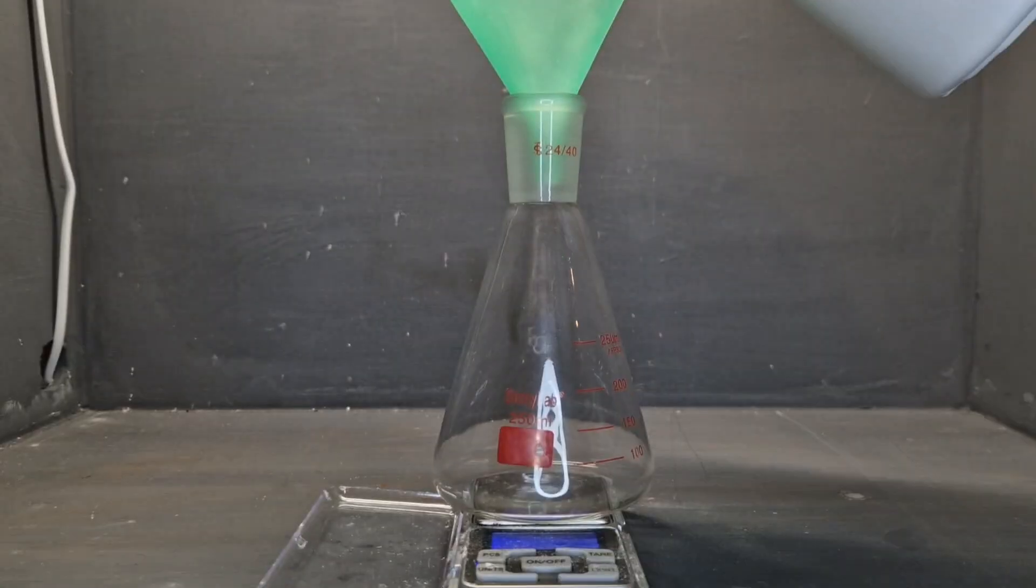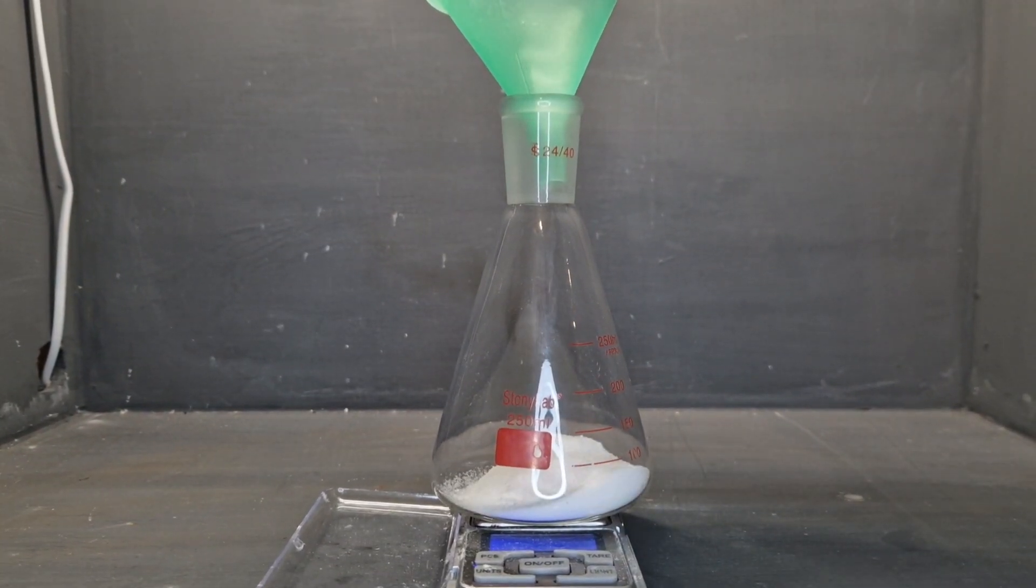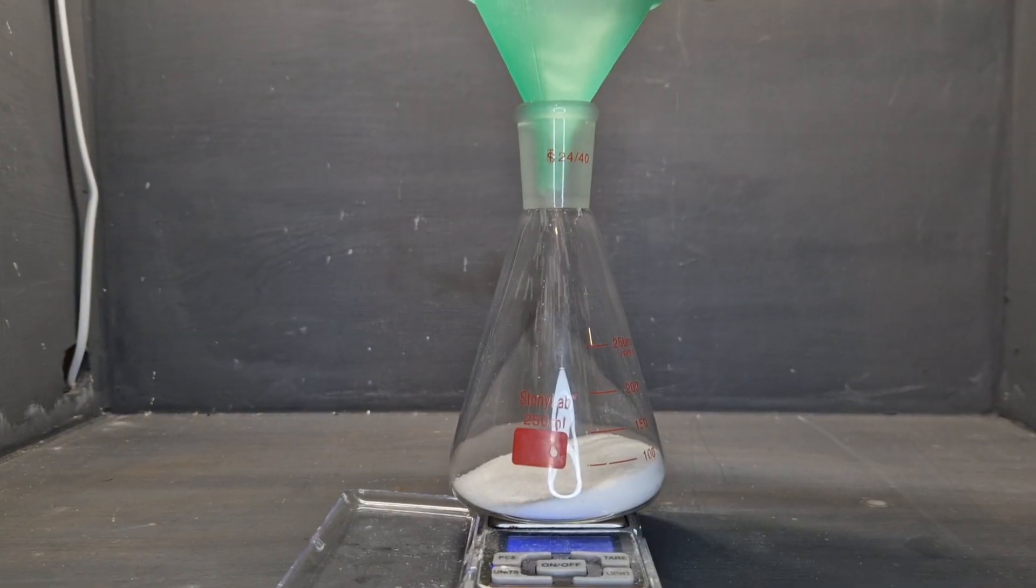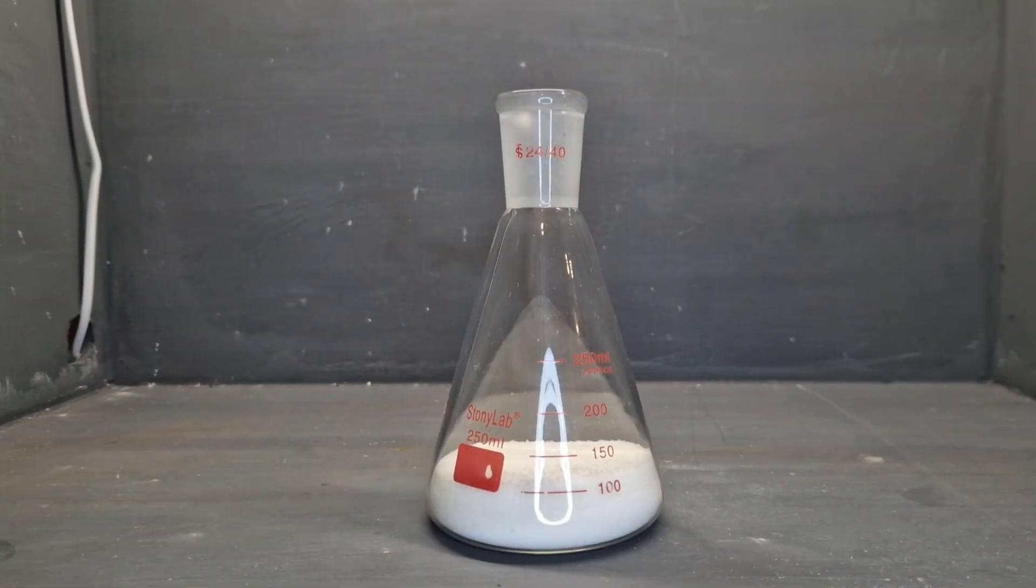To start off we're going to add 50 grams of potassium nitrate to a conical flask. Then we'll add around 100 grams of sodium bisulfate. Then we're going to stopper the flask and shake it well.